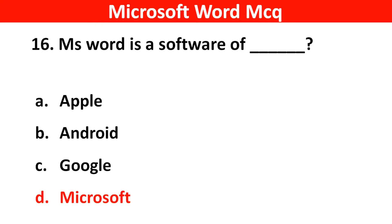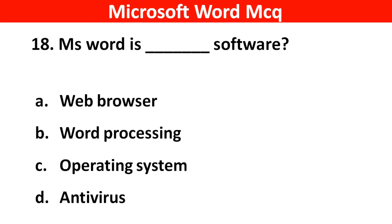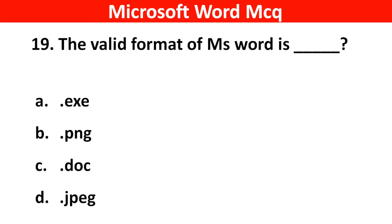Next question: Which is the word processing software? Right answer is Option B: MS Word 2007. Next question: MS Word is a dash dash software. Right answer is Option B: Word Processing. Next question: The valid format of MS Word is dash dash. Right answer is Option C: .doc.